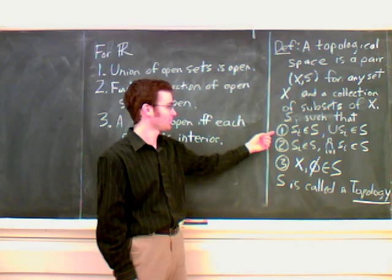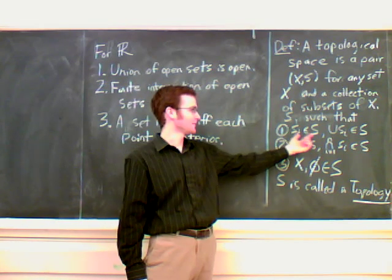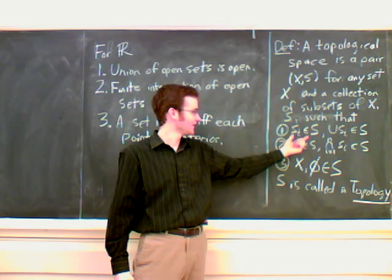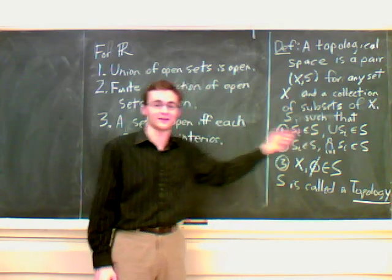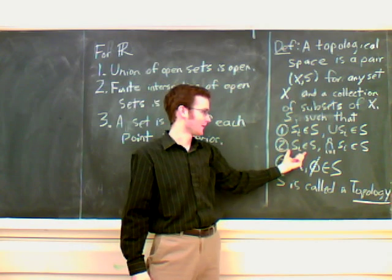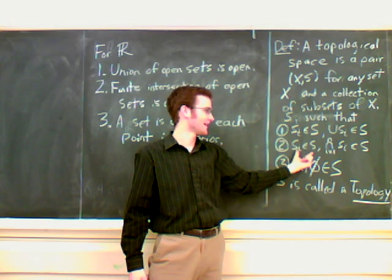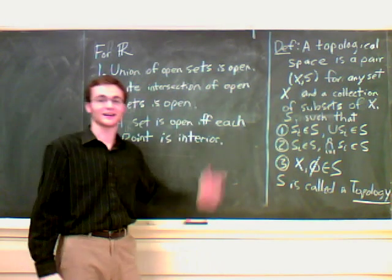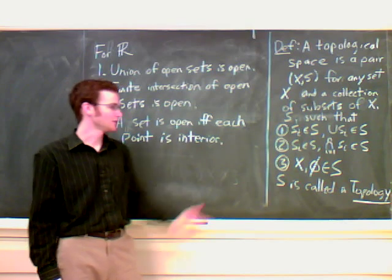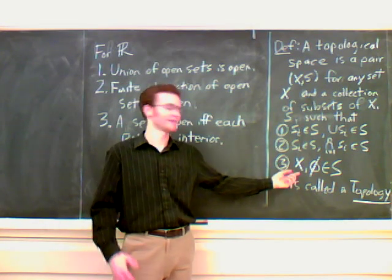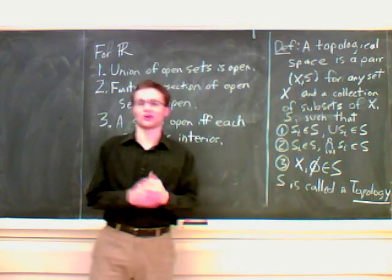The three properties are: first, if we have elements in S, their union is also in S. So the union of open sets is open. That's the first property. The second property is that if you have elements in S, the finite intersection of them is also in S. Again, the second property. The third property is that X, the set of everything, and the empty set are also in S.